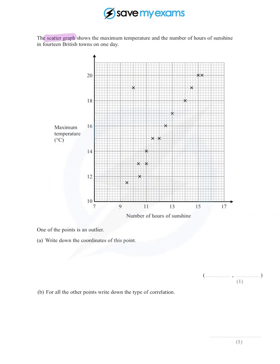We have a scatter graph which shows the maximum temperature on the vertical axis in degrees Celsius or centigrade, and the number of hours of sunshine on the horizontal axis. It's in 14 British towns on one particular day.